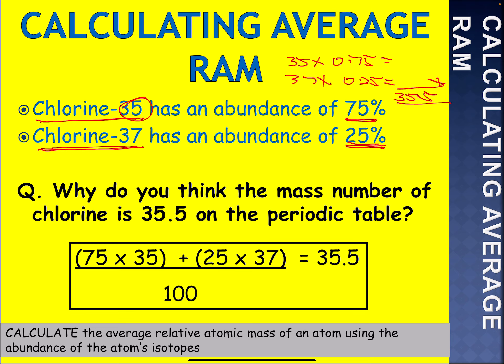So, chlorine-35 has an abundance of 75% and chlorine-37 has an abundance of 25%. Because it's a percentage, you divide by 100, and there's your answer. You can do it either way — both methods give the same result.